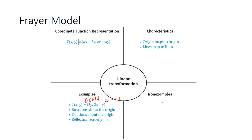Linear transformations include rotations about the origin — 90°, 180°, 270°, clockwise or counterclockwise. Dilations about the origin — we're just shrinking and expanding around the origin. And reflections across y equals x — because y equals x goes through the origin. Any of these geometric transformations are also linear transformations.